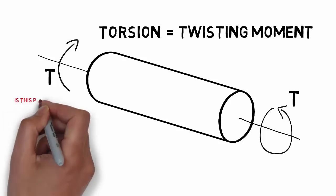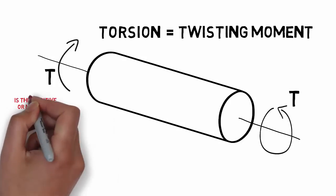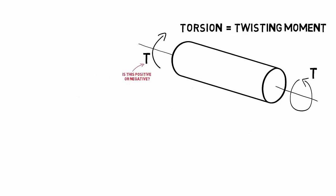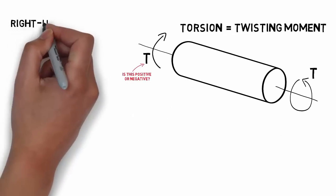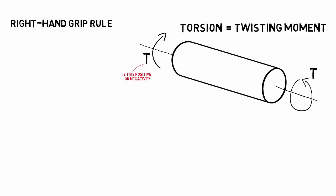As engineers like to talk in scalars rather than vectors, we need to establish some form of sign convention for these torsional moments. Enter the right hand grip rule.